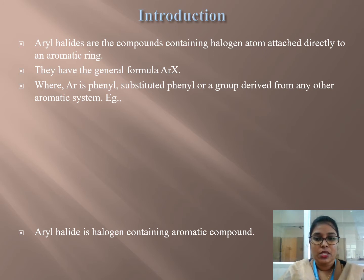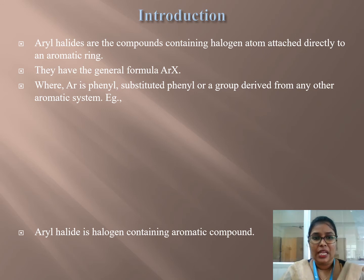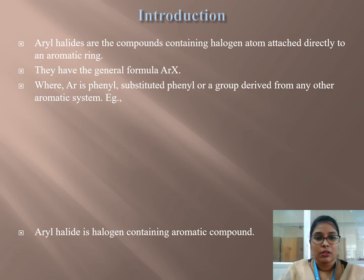Aryl halides are the compounds containing the halogen atom attached directly to an aromatic ring. The aromatic ring might be 6-membered, or sometimes 7-membered or 8-membered, having aromaticity. They have the general formula of ArX, where Ar is phenyl, substituted phenyl, or a group derived from any other aromatic system.